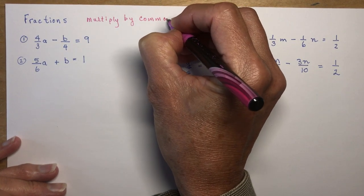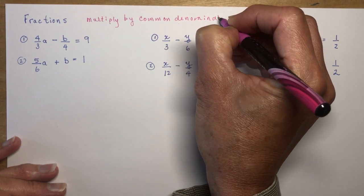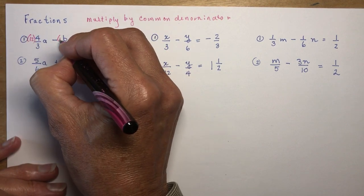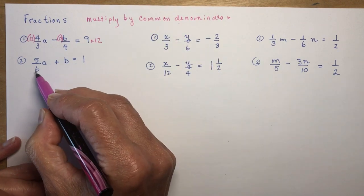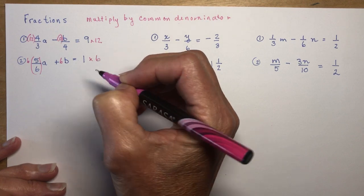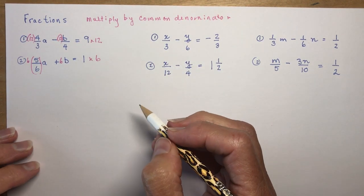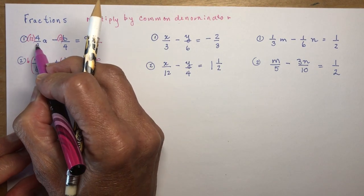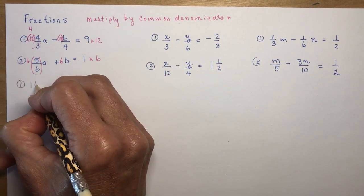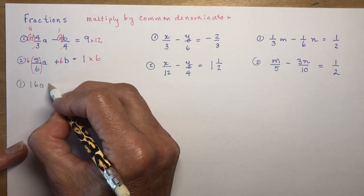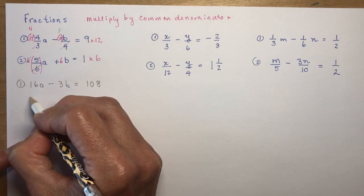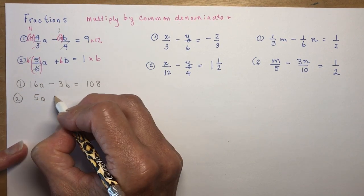I've got three systems to do — each pair is a system. For the first one, the common denominator of 3 and 4 is 12, so I'll multiply each term in that equation by 12. For the second equation, to get rid of the 6 in the denominator I multiply by 6. Now: 12 times (4a/3) — the 3 goes into 12 four times, so 4 times 4 gives 16a. The 4 goes into 12 three times, so minus 3b. And 9 times 12 equals 108. Equation 2 becomes 5a plus 6b equals 6.